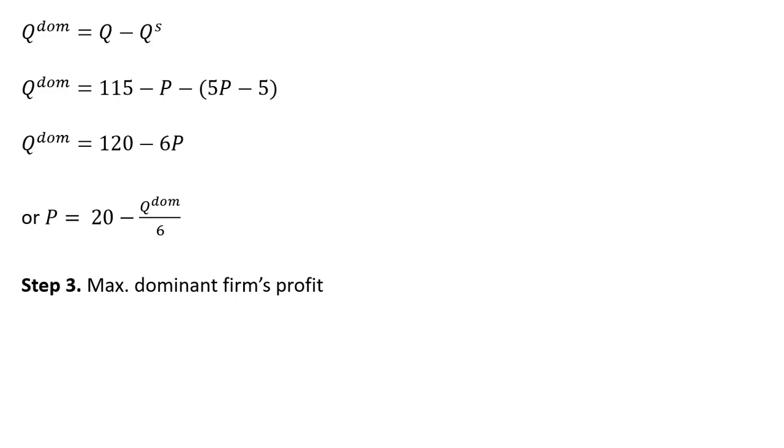Dividing through by six. And step three, we're going to maximize the dominant firm's profit. We're going to get revenue first. We're going to set marginal revenue equal to marginal cost. We'll get revenue, which is price times quantity. So substituting in for P, the dominant firm's inverse demand. And then simplifying.